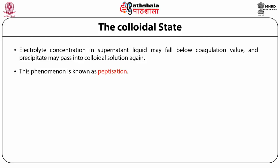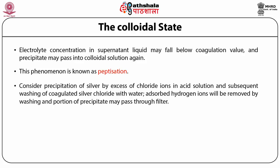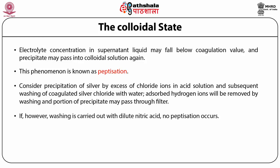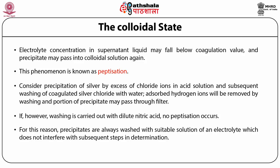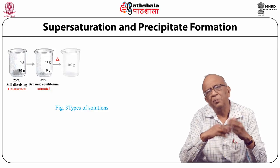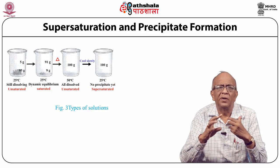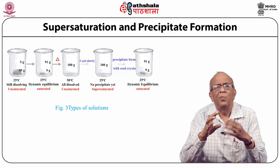By way of illustration, consider the precipitation of silver chloride by excess chloride ions in acid solution and the subsequent washing with water. The adsorbed hydrogen ions will be removed by washing and a portion of the precipitate may pass through the filter. If, however, washing is carried out with dilute nitric acid, no peptization occurs. For this reason, precipitates are always washed with a suitable electrolyte solution that does not interfere with the subsequent steps in the determination.